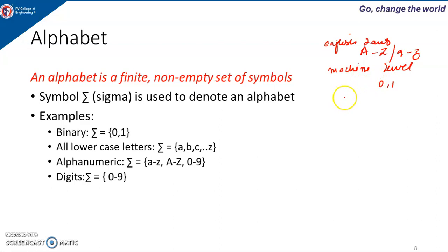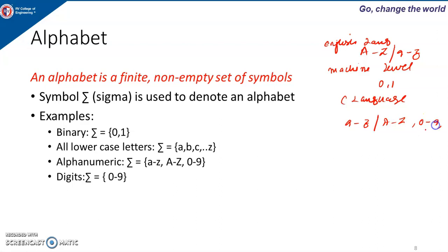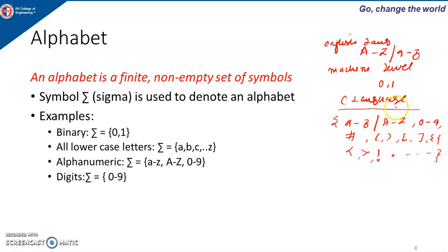In C language, we can use letters from A to Z, either small or capital. We can use digits. We can use arithmetic operators and different other symbols. So in C language, the symbols will be capital A to capital Z, digits from 0 to 9, and then hash, parentheses, square brackets, curly braces, angular brackets, dot operator, and so on. All these are symbols which we use to represent the C language.